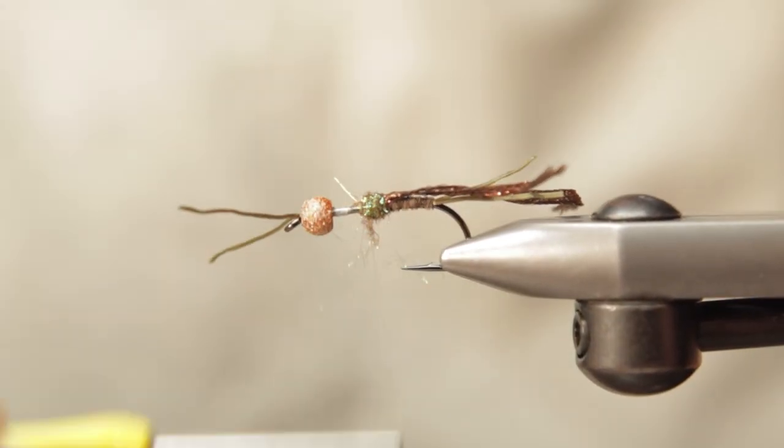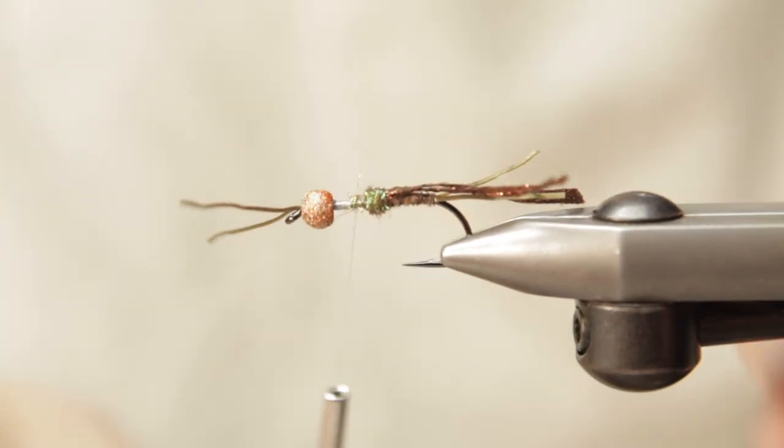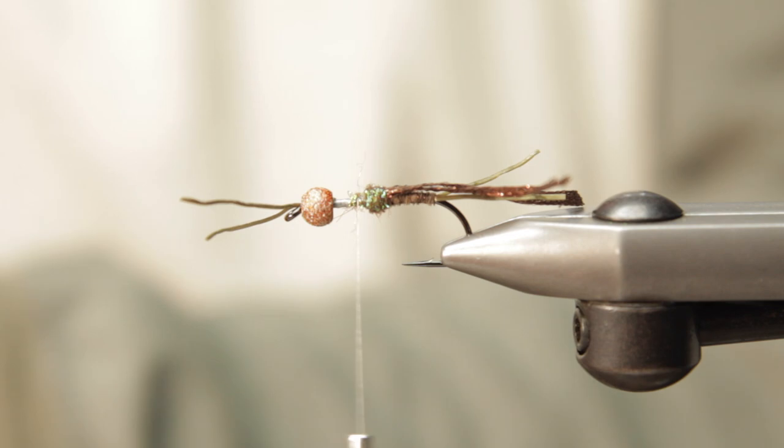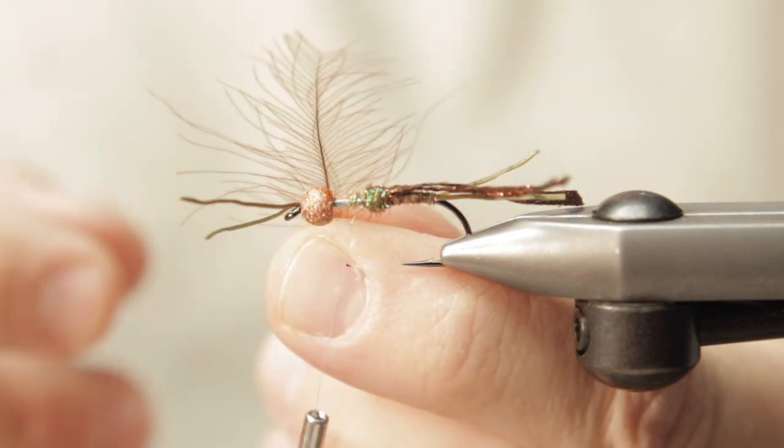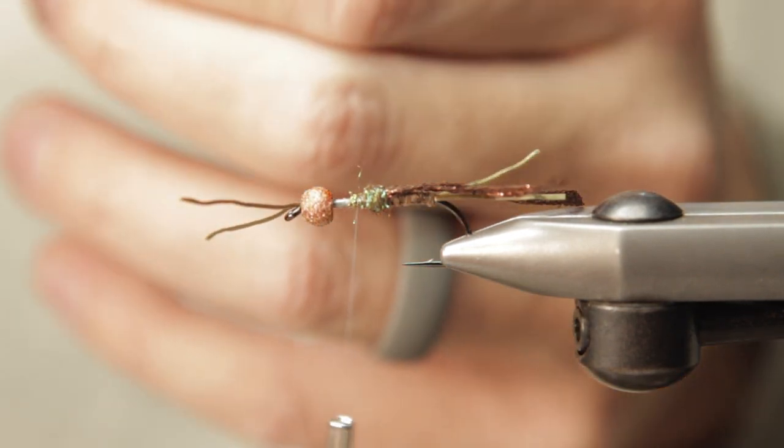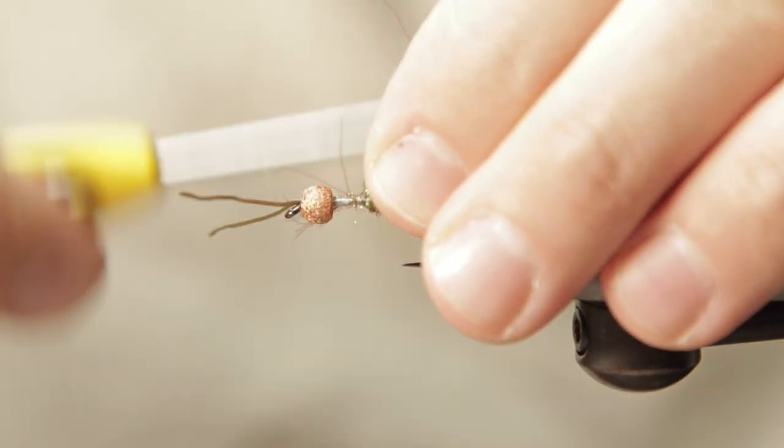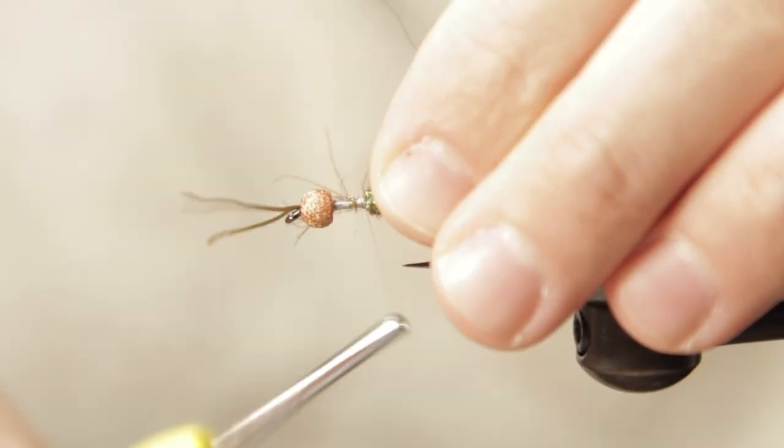This is a great fly during runoff, springtime fishing when those big salmon flies are starting to come around. But you can also tailor this down to a size 18 and fish it as a little black winter stone. You can get different colors of turkey to work with.